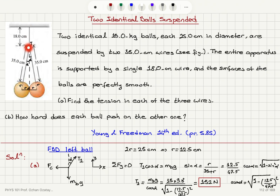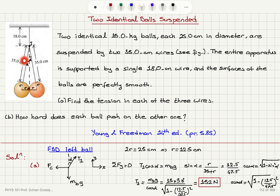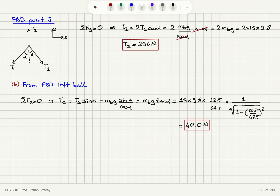To find the tension in the upper wire, I focus on the massless point J. Due to symmetry, both lower wires have the same tension T1, while T2 pulls upward. Both T1 tensions make angle alpha with the vertical, forming an isosceles triangle. Therefore T2 equals 2 times T1 cosine alpha, and substituting T1 equals mg divided by cosine alpha, T2 equals twice the weight of one ball, giving 294 newtons.